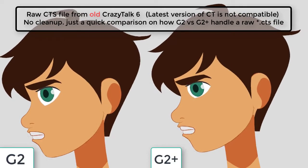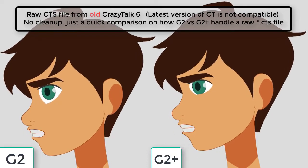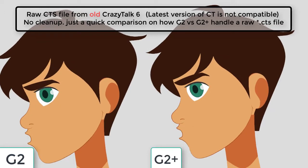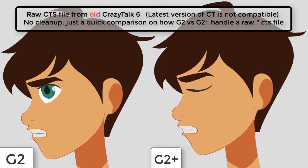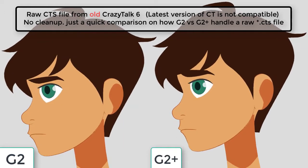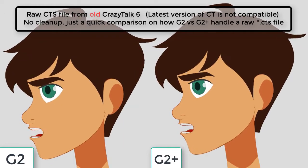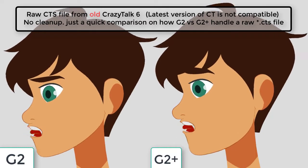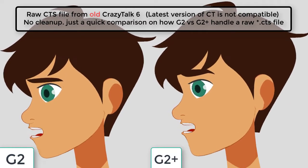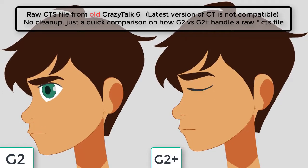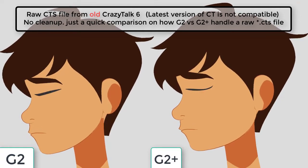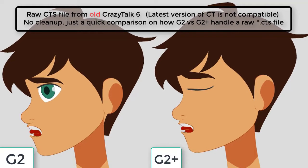CrazyTalk provides several ways for you to animate your images or illustrations with feeling and emotion. You can simply apply an emotion template, which can automatically create a general mood for your overall animation. Look, it can easily turn my script into a sad mood.